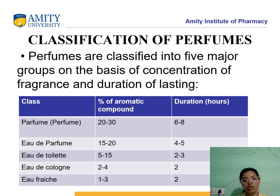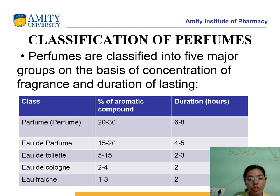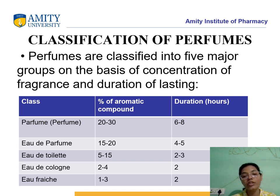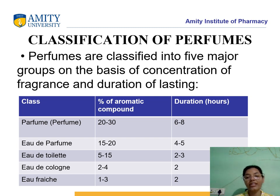Moving forward with the classification of perfume — they are divided into majorly five groups on the basis of the concentration of fragrance utilized as well as the duration of lasting of the fragrance. Class 1, named Perfume or Parfum, has an aromatic compound concentration of 20–30% and duration of 6–8 hours. The second category, Eau de Parfum, has 15–20% aromatic compound and duration of 4–5 hours. The third category, Eau de Toilette, has 5–15% and lasts 2–3 hours. The fourth category, Eau de Cologne, has 2–4% aromatic compound and a duration of 2 hours.